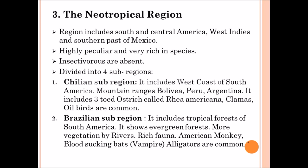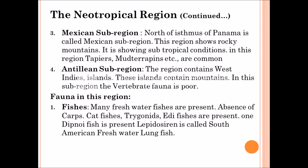The second sub-division is the Brazilian sub-region. It includes the tropical forests of South America, also called evergreen forest because it contains rivers. Due to the presence of rivers, it contains high flora and also high fauna. Commonly found fauna include blood-sucking bats, alligator, and American monkeys. The third sub-region is the Mexican sub-region, which includes the area north of the Isthmus of Panama. This region shows rocky mountains and subtropical conditions, with tapirs and terrapins common.